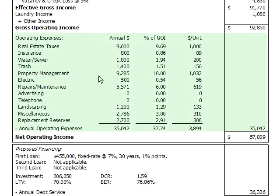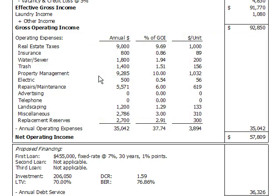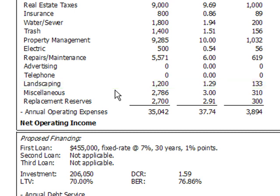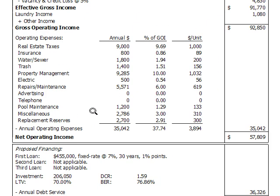You want to show the expenses required to operate the property and list them here. These are the expenses ProAPOD includes as the default, but they can be changed in our forms. For example, if a property doesn't have a landscaping expense but has a pool maintenance expense, you simply change the label in the form and the APOD reflects it. The important thing is to show all the expenses an investor will need to pay to keep the property operational — in other words, what does it take to keep the income flowing in?